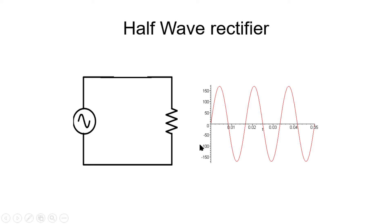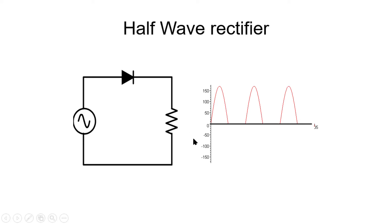Our first attempt at rectifying an AC voltage: we connect the source — which will very often be the secondary of a transformer — to the load represented by a resistor. The voltage and current in the resistor will be a sinusoid, of course. But if we connect a diode in the current path, that will eliminate the backflow and filter out the negative semicycles of the wave. The voltage in the load then becomes only the positive half — that is what we call the output of a half-wave rectifier. It certainly is not DC, but at least it's all positive.